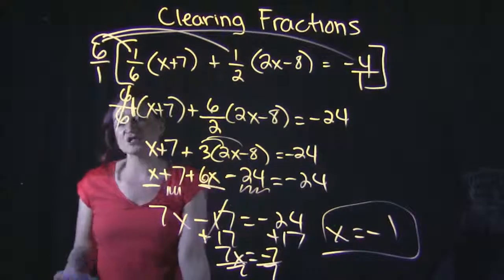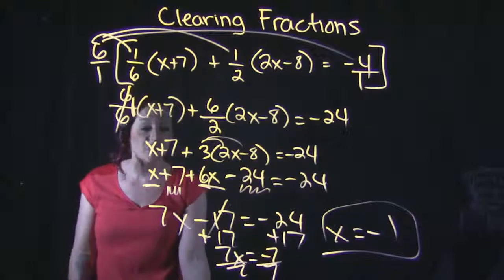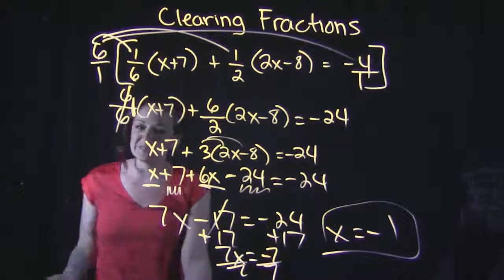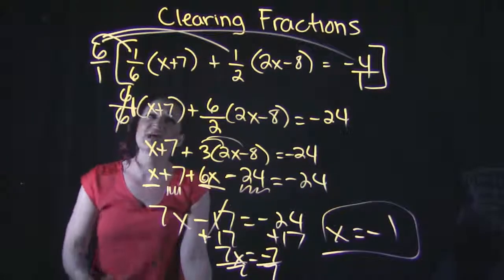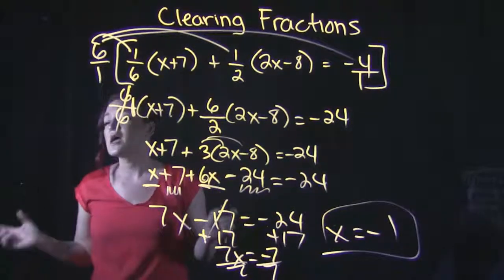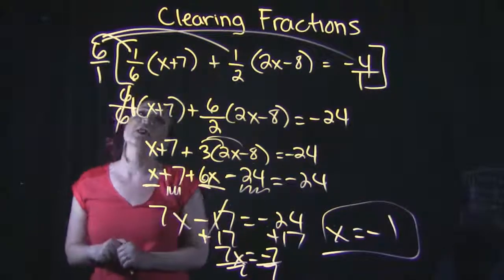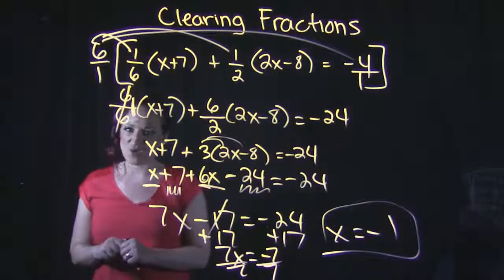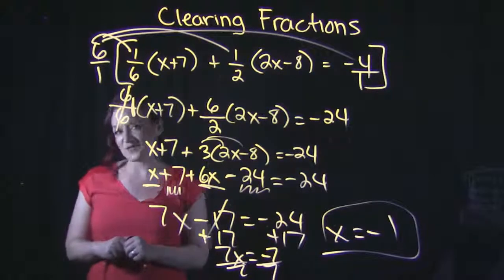So remember, if you just have too many fractions in the problem and would like to get rid of them, or the question specifically asks you to solve it by this method, just remember to multiply the entire equation by the lowest common denominator, and it will cancel those fractions out to a whole number. Otherwise, that's it for this video.